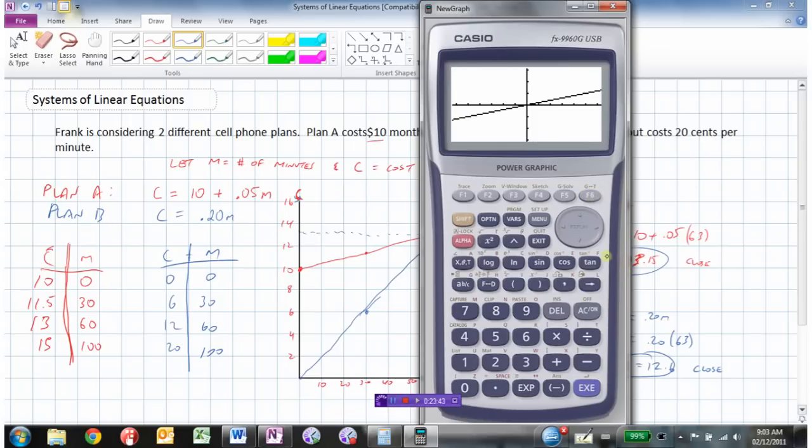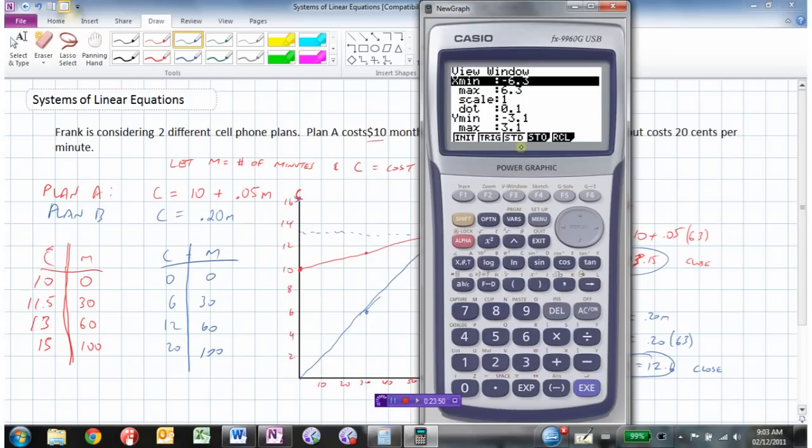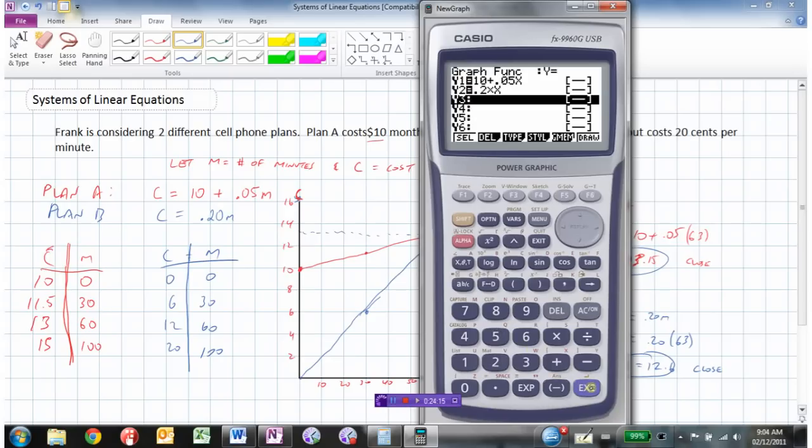And now the problem is the view window is not set up properly. So I'm going to go to my view window and it's got an x value from minus 6 to positive 6. From our graph I needed it to go from 0 to 100. And my scale will go up by 10. And then the y values need to go from 0 to 20. Let's go up by 5 on that scale.